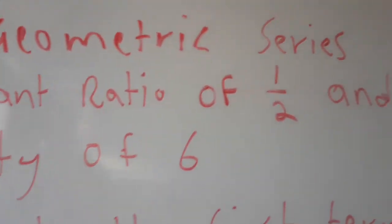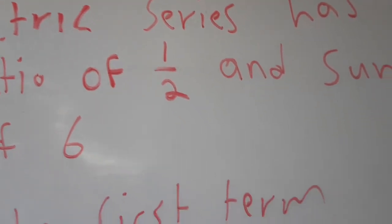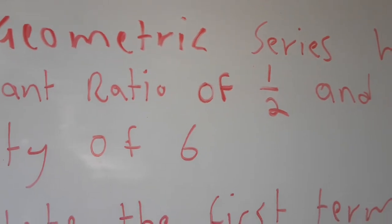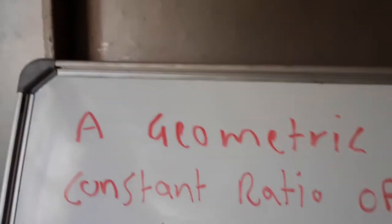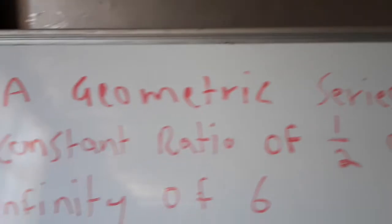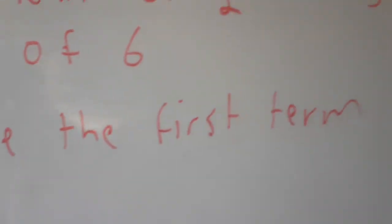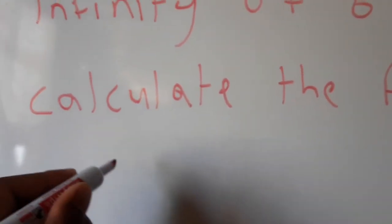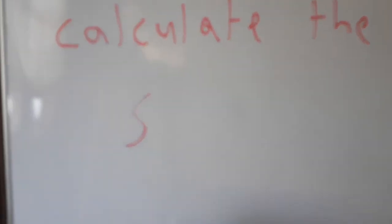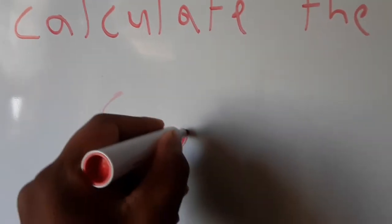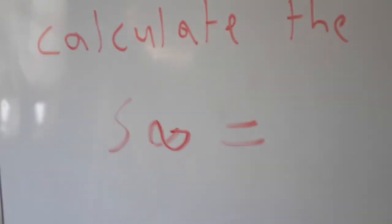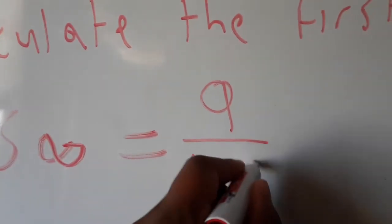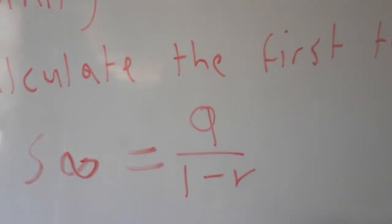We are given a constant ratio of one half and a sum to infinity of six. We are asked to calculate the first term. We'll use the sum to infinity formula: S∞ equals a over one minus r.